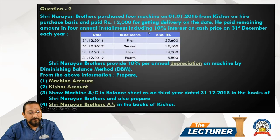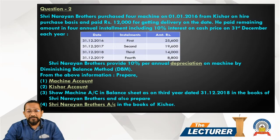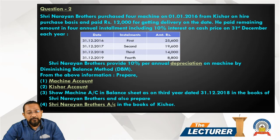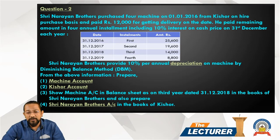We have a second question. Start with the second question. Question number two: Sri Narayan Brothers purchased a machine on 1st January 2016, and sold it on a hire purchase basis. They paid $12,000 as a down payment at the time of delivery. The remaining amount is in four annual installments including 10% interest on the cash price, payable each December.